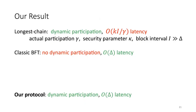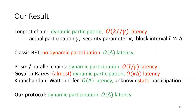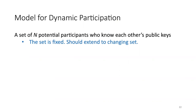Coming back to the central question: we have two styles of protocols — one supports dynamic participation but not low latency, the other has low latency but not dynamic participation. Some related works have attempted to solve both; some reduce latency but don't achieve optimal constant latency, and one achieves constant latency but targets unknown static participation, not really dynamic. The main purpose of this talk is to show a new protocol that achieves both simultaneously.